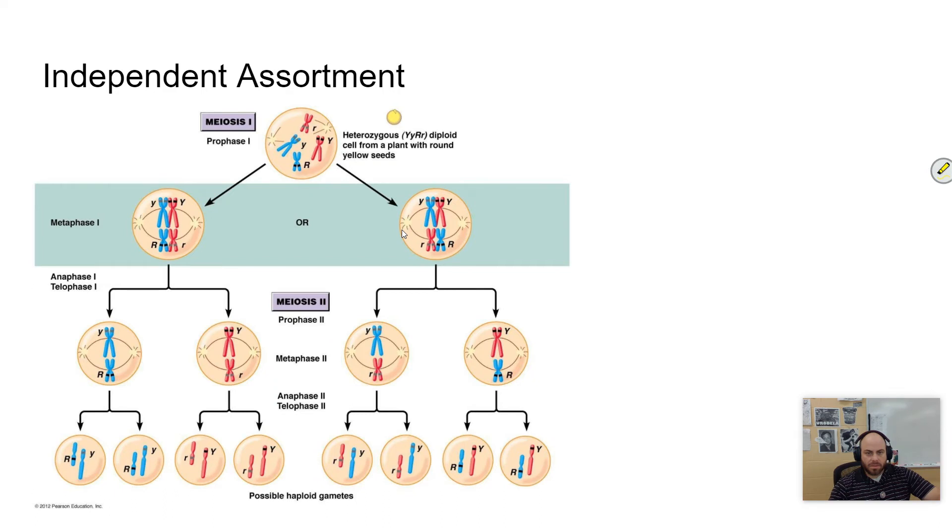I think it's two to the 23rd power. I think that's how you figure that. So it's quite a bit of combinations there. Essentially endless combinations, especially if you combine that with crossing over. There's a lot of genetic diversity that is created just from these two things.